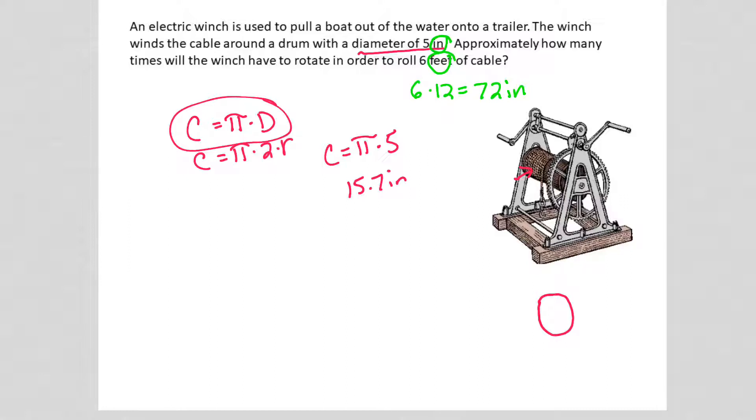The cable, we want to know how many turns it takes to get 72 inches onto my 15.7 inch circumference. So I'm going to do 72 divided by 15.7, and that's going to give me 4.58.